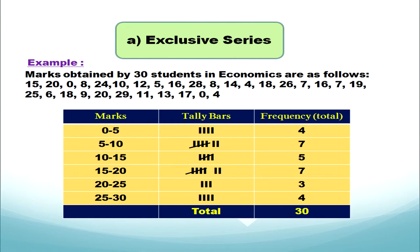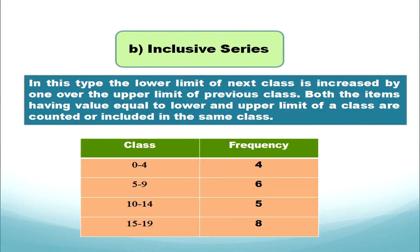We get 7 tallies for the class 5 to 10, so frequency is 7. Likewise we construct all tally bars and frequencies for each class. So we have learned about exclusive series: the class interval gap remains the same, the upper limit of the previous class is the next lower limit, and the value of the upper limit is not included in that class — it goes to the next class.